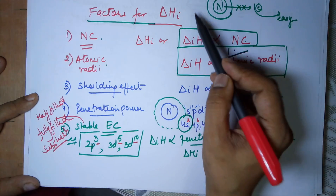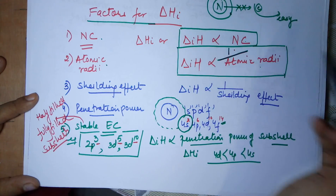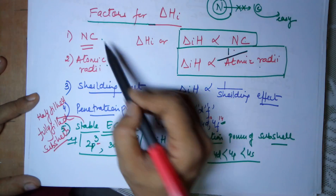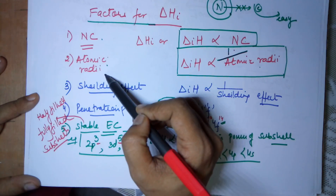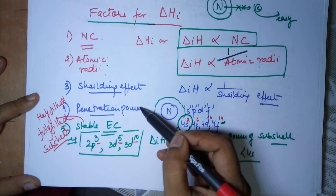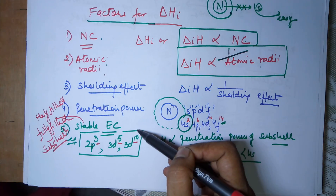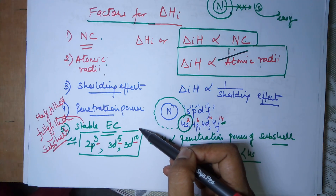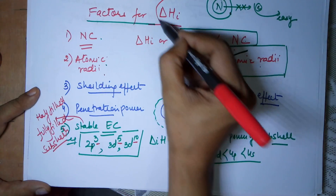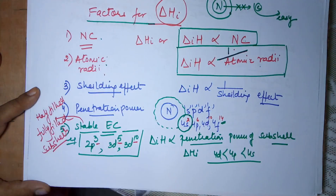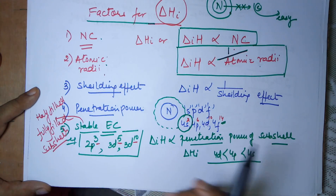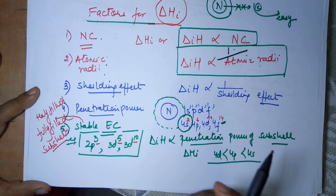To conclude, the five factors on which ionization energy depends are: nuclear charge, atomic radii, shielding effect, penetration power, and stable electronic configuration. With this, I conclude my class. Thank you. All the best.